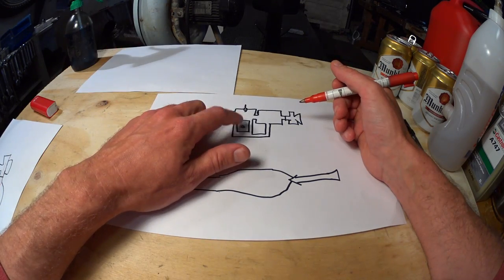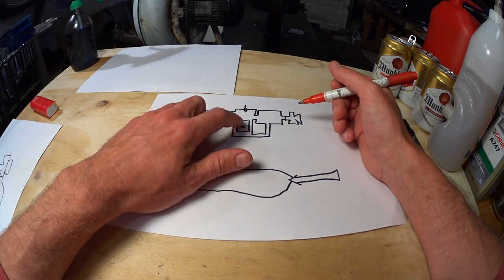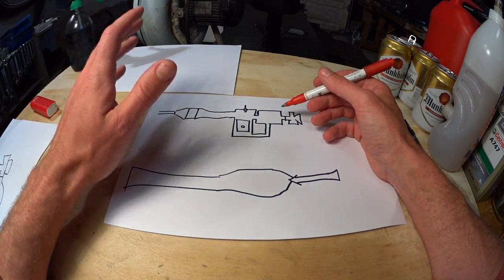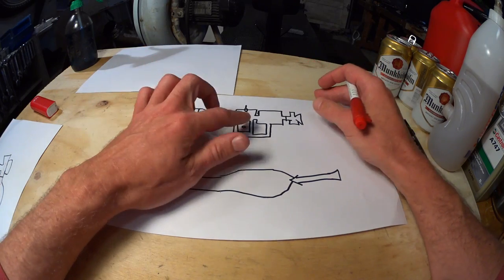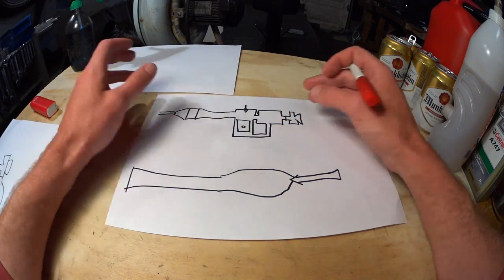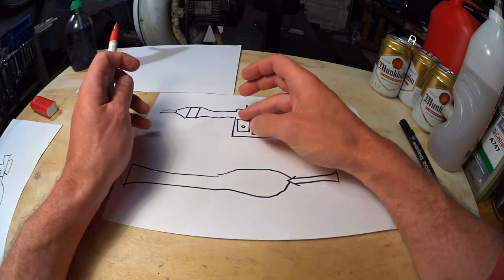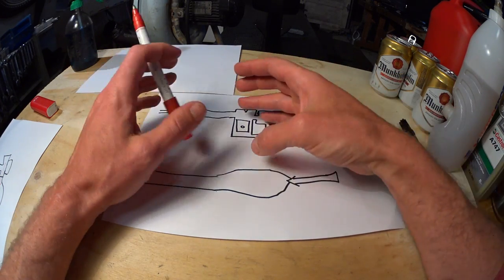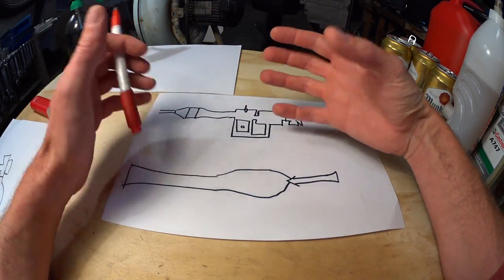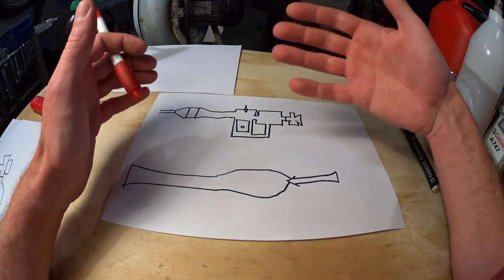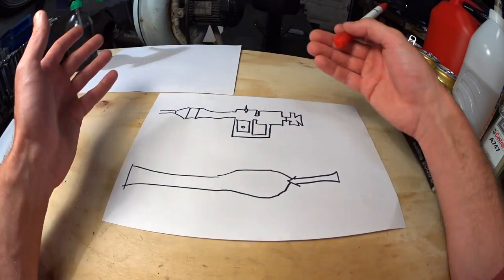So the piston does not contribute much to induction nor transfer when the engine is in the power band. Most of the job of transferring mixture through the engine is not done by the piston. It's the pipe that's doing all the work. But the whole system, just like in a pulse jet, has to work together in synergy or harmony. Or it has to resonate in the same tune.